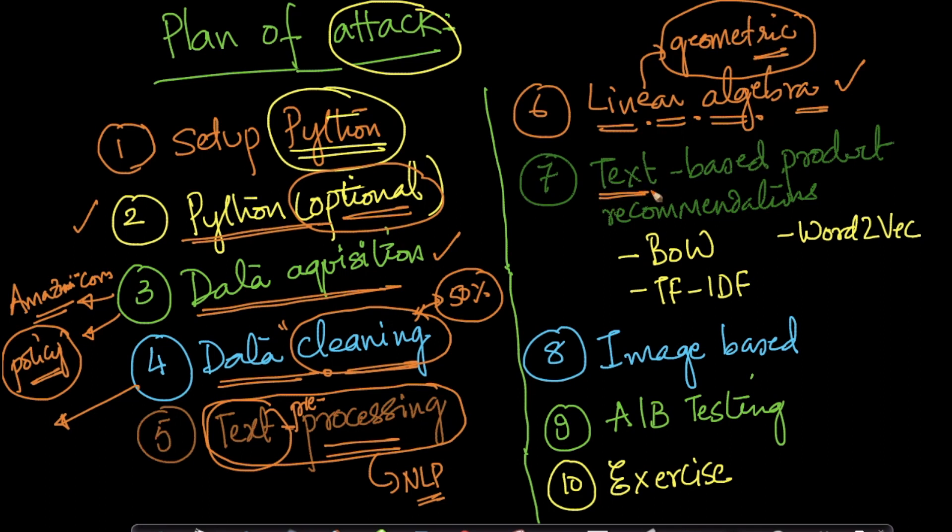Once we're done with this, we'll solve the problem using text. We'll start building text-based product recommendations. In this, there are three broad techniques - we'll use modified versions of these as we go. We'll use something called Bag of Words, TF-IDF, and Word2Vec. Bag of Words and TF-IDF are classical techniques that search engines used to use or even use today. These are techniques that natural language processing folks discovered or invented for search engines. Word2Vec is a more recent technology from 2013.